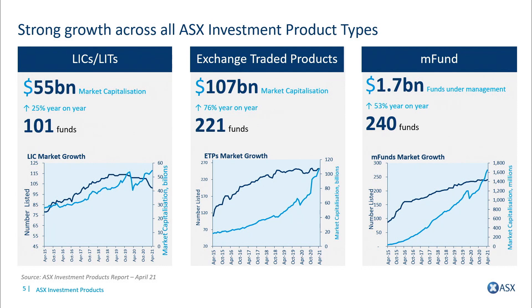Exchange traded products will be focused on a bit more in this presentation. Suffice to say, there's over $100 billion sitting in exchange traded products at the moment and over 200 funds. There's actually been over a 70% increase in funds under management year on year — tremendous growth in this particular product segment.